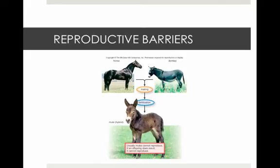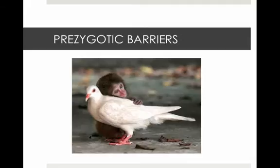Reproductive barriers prevent different species from interbreeding. Some examples of reproductive barriers include a range of prezygotic barriers. These prezygotic barriers don't allow fertilization of an ovum by a sperm from a different species.